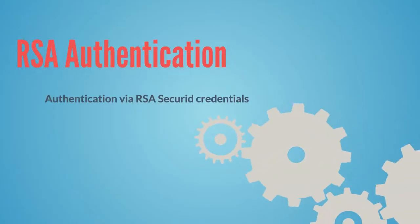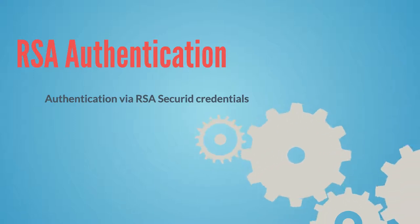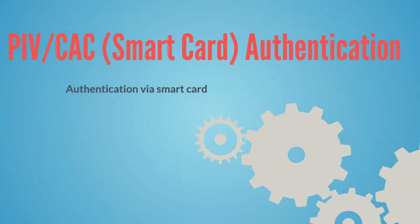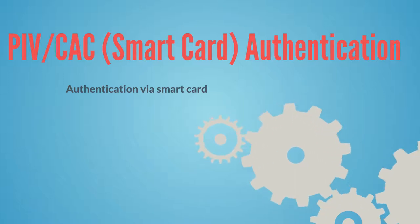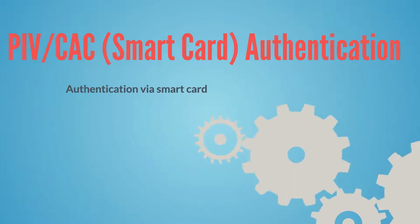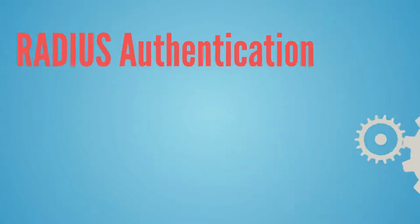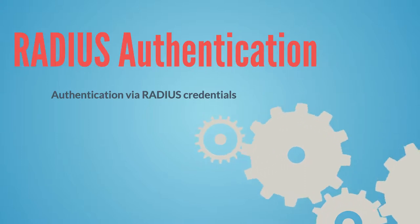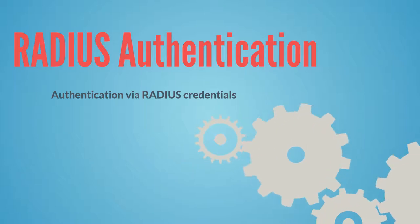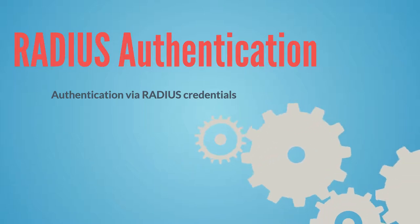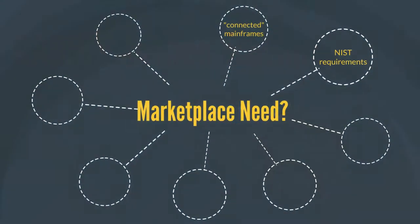Administrators can require users to log on to ZOS applications by using RSA Secure ID credentials instead of a password or password phrase. Administrators can also require users to log on through CA Privileged Access Manager by using a personal identity verification or common access smart card, followed by a CA Top Secret password or password phrase. When authenticating through a RADIUS server, a user opens a mainframe session and logs in with the RADIUS user ID and credentials. If the user is determined to be RADIUS governed, the RADIUS client processes the request and passes it to the RADIUS server for validation.